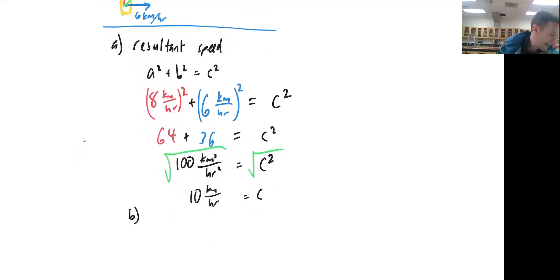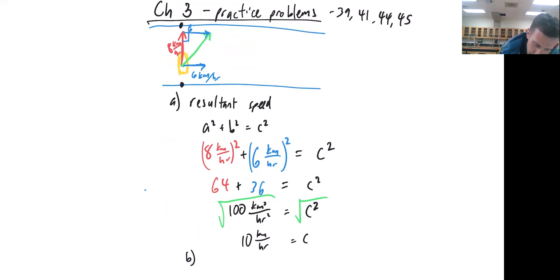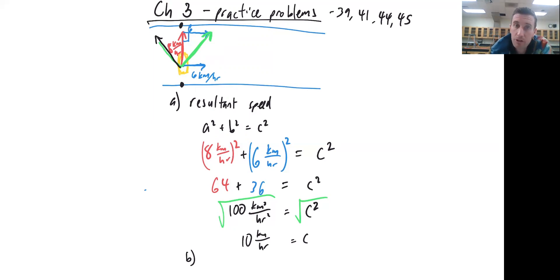Part B asks: how fast and in what direction can the boat be rowed to reach a destination directly across the river? If I want to go directly across, I need to start here and end up directly across. The river is going to push me downstream at six kilometers per hour, so to counteract that I still need to go forward across the river but I need to go upstream a little bit as well. I would need to counteract the six kilometers per hour downstream with an element upstream of six kilometers per hour.